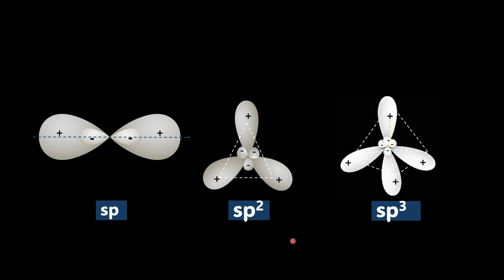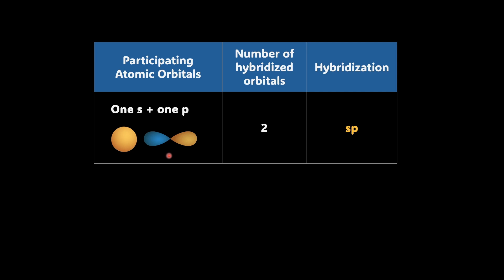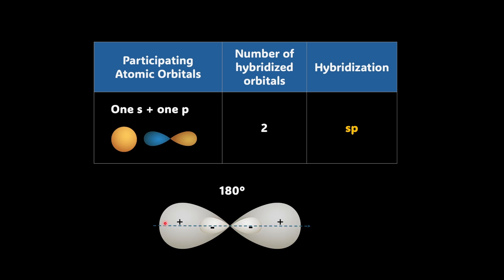Let's start with sp hybridization. What happens during sp hybridization? One s orbital and one p orbital mix together to form two sp orbitals. Each of these new orbitals is made up of 50% s character and 50% p character. Think of them as two directional lobes. This is like one part, plus and a minus.